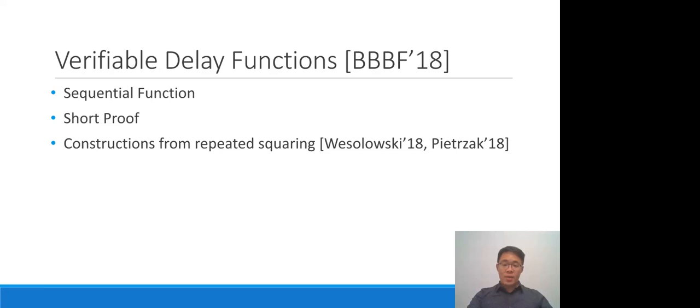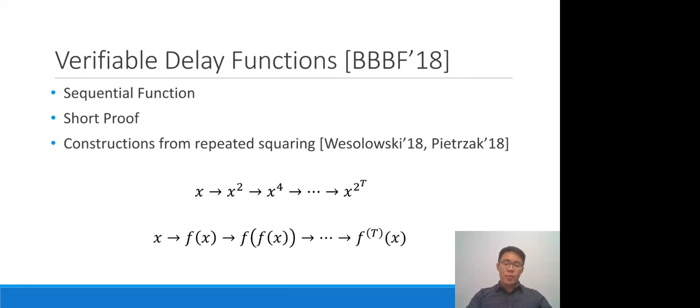Both the Wesolowski and Pietrzak constructions use repeated squaring as the sequential function: you start from x, compute x squared, x to the fourth, and so forth all the way to x to the 2^t. What differs in these papers is that they produce different proofs, both using algebraic properties of repeated squaring. An interesting way to view this: if f(x) is the squaring function, this repeated squaring procedure is just iteratively applying f on the input x.